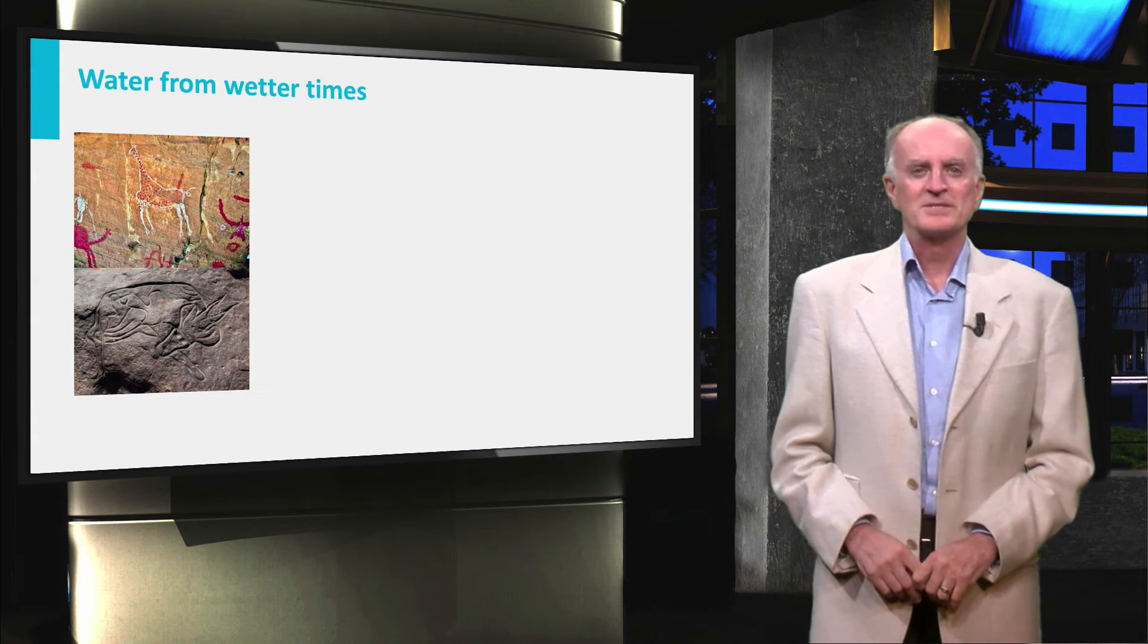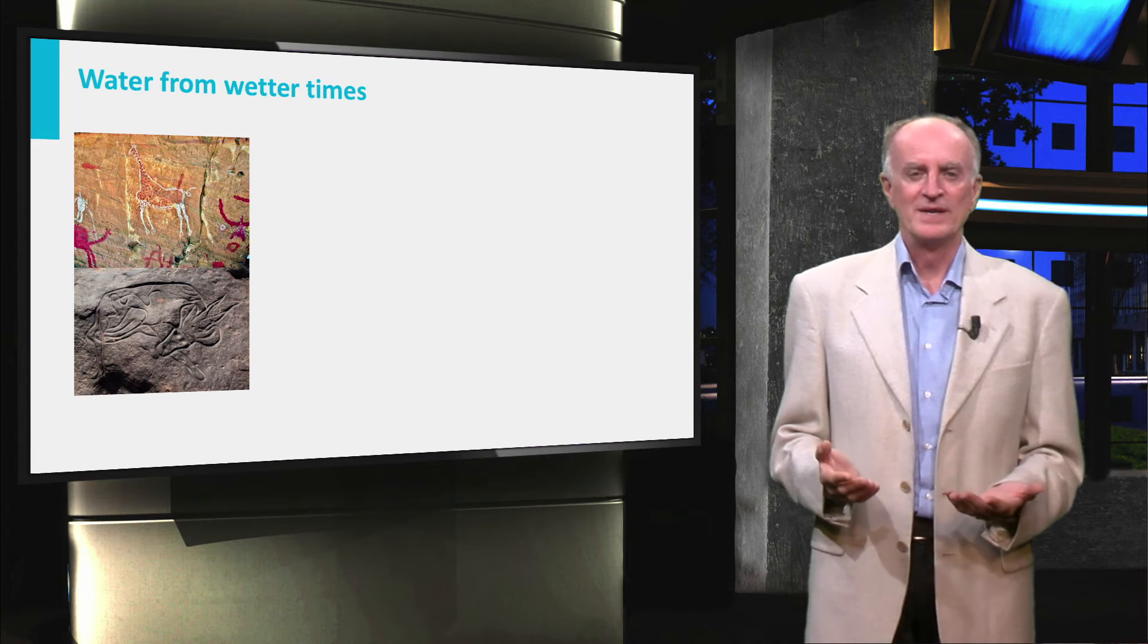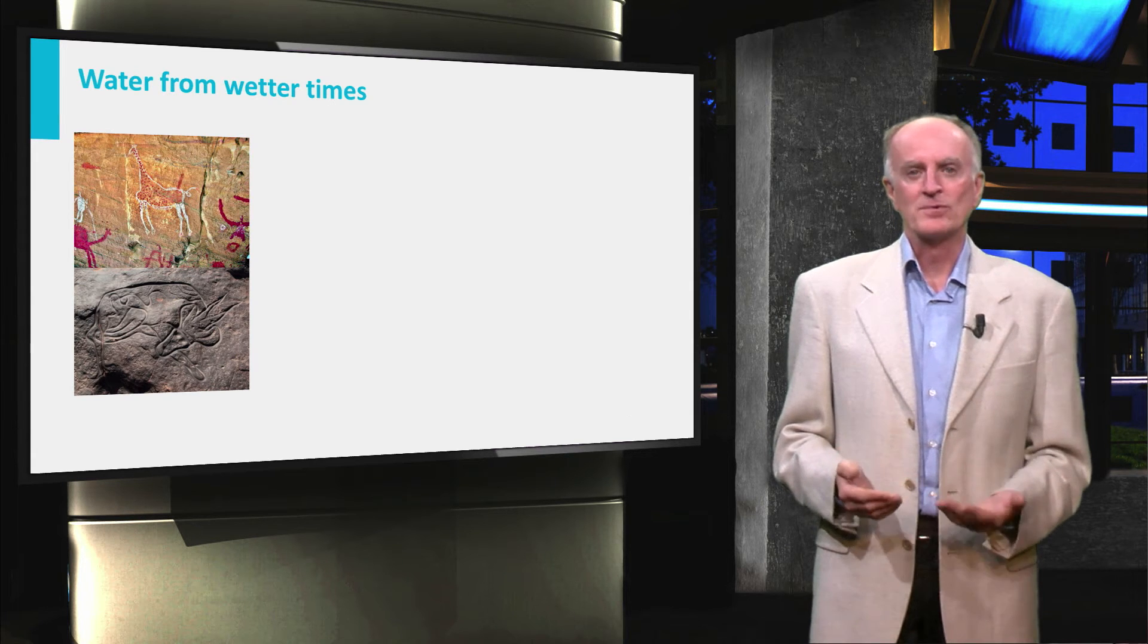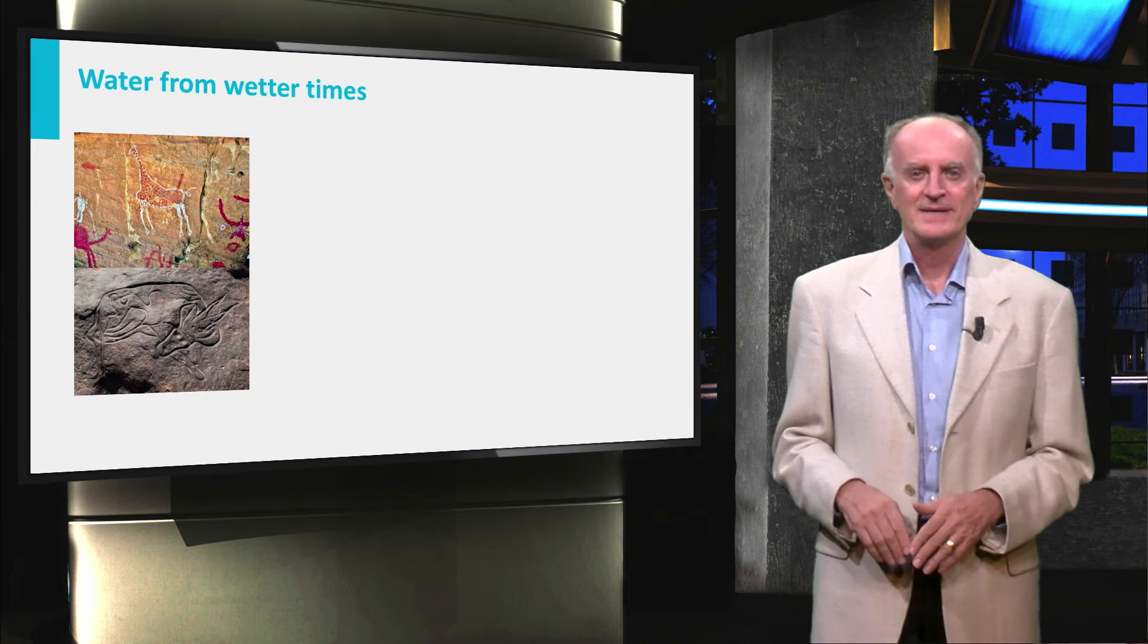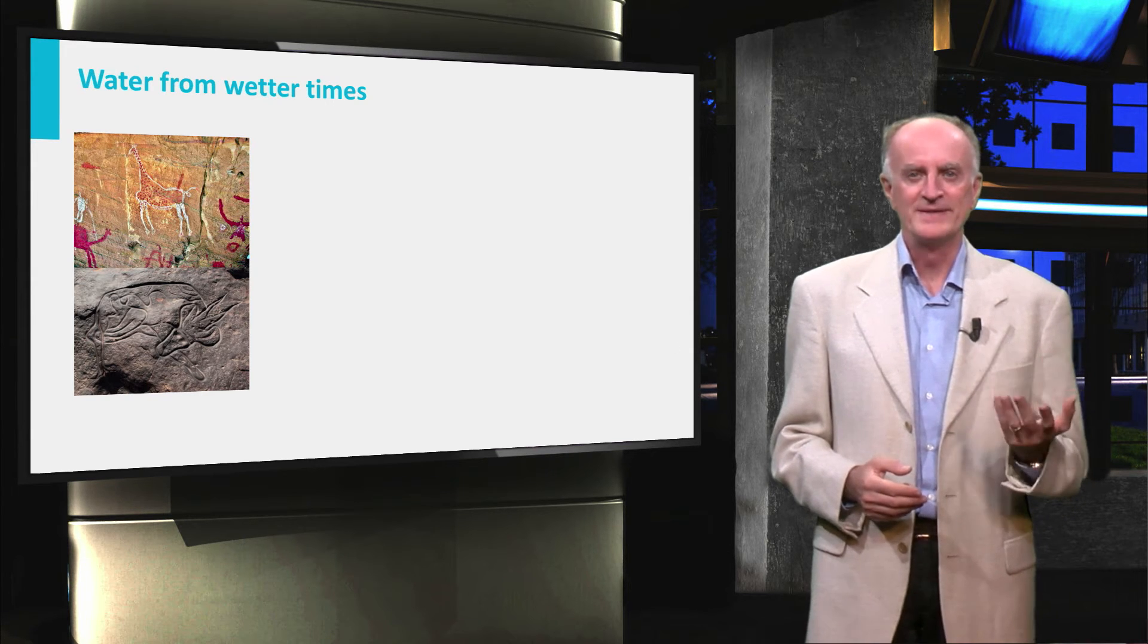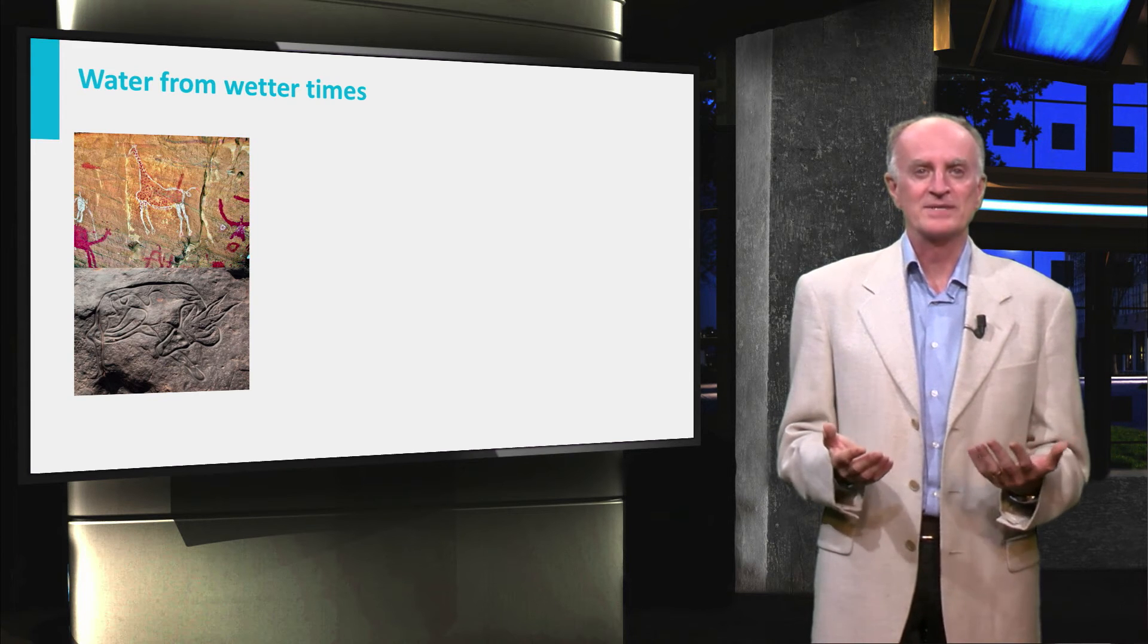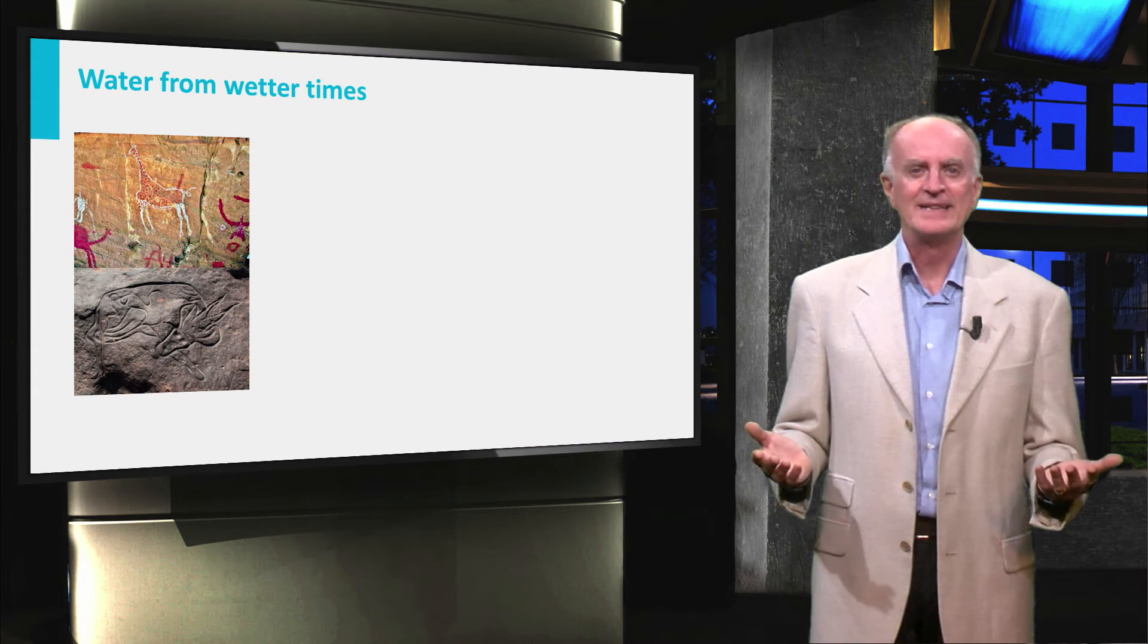We have seen in previous clips that the climate we enjoy at present is very different from the one dominating the world something like 10,000 years ago. In areas such as North Africa, precipitations were more abundant and giraffes and other animals were less scarce than at present in mountains like the Hoggar and Tassili massifs.